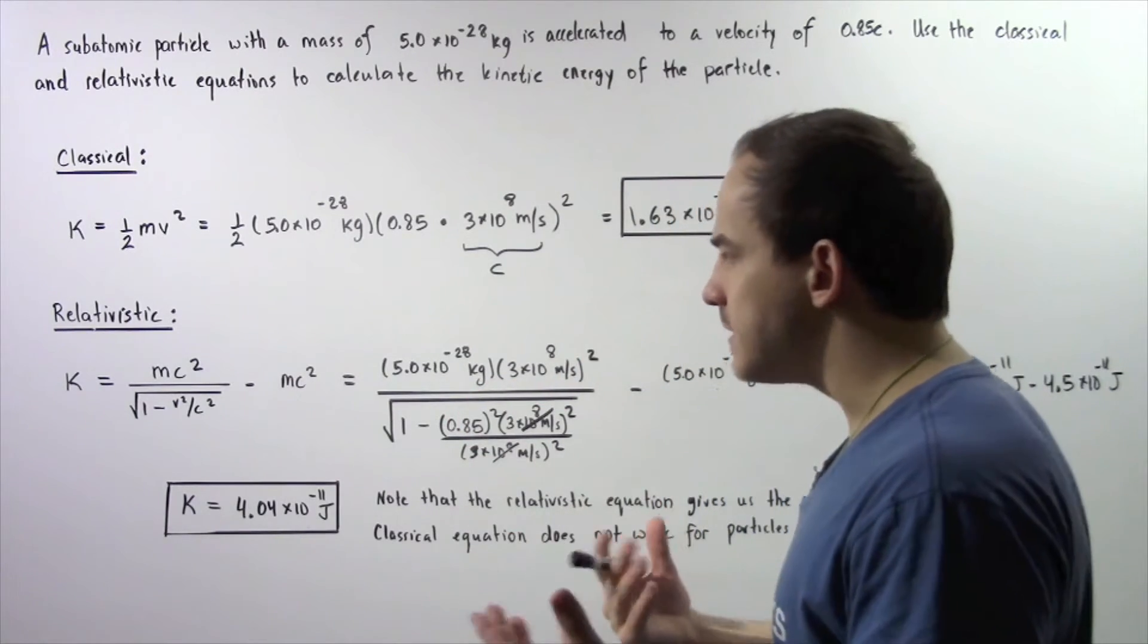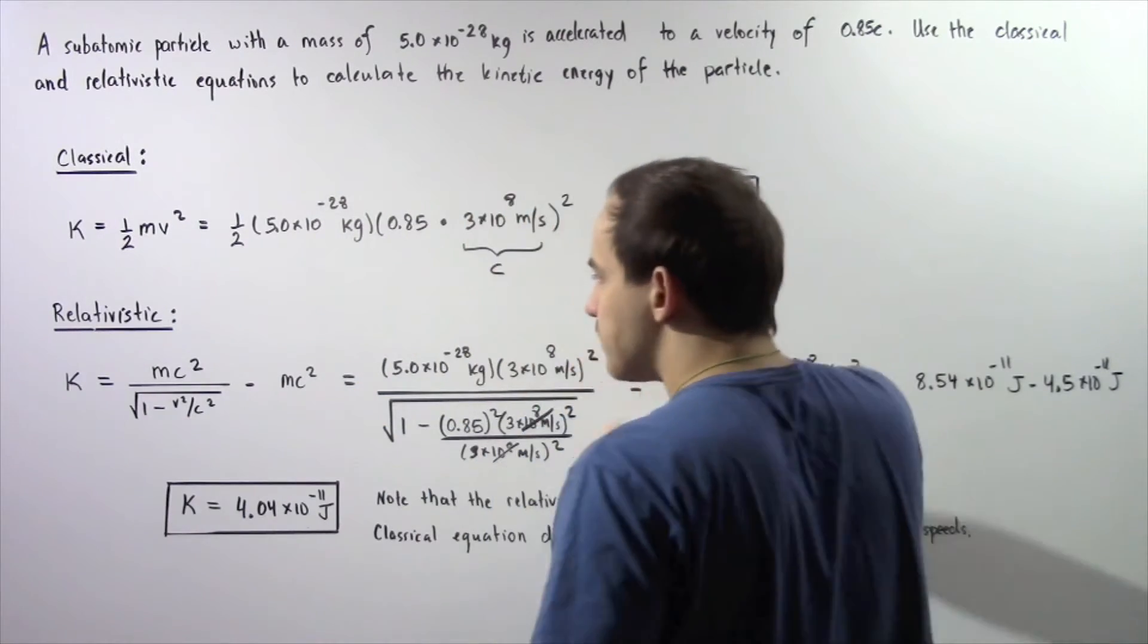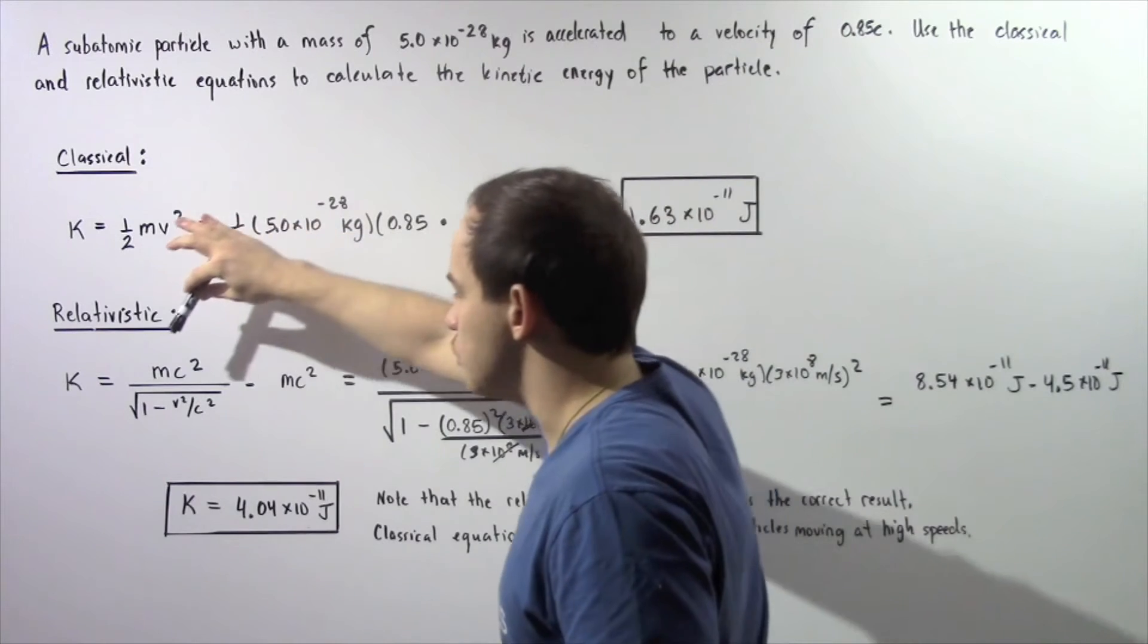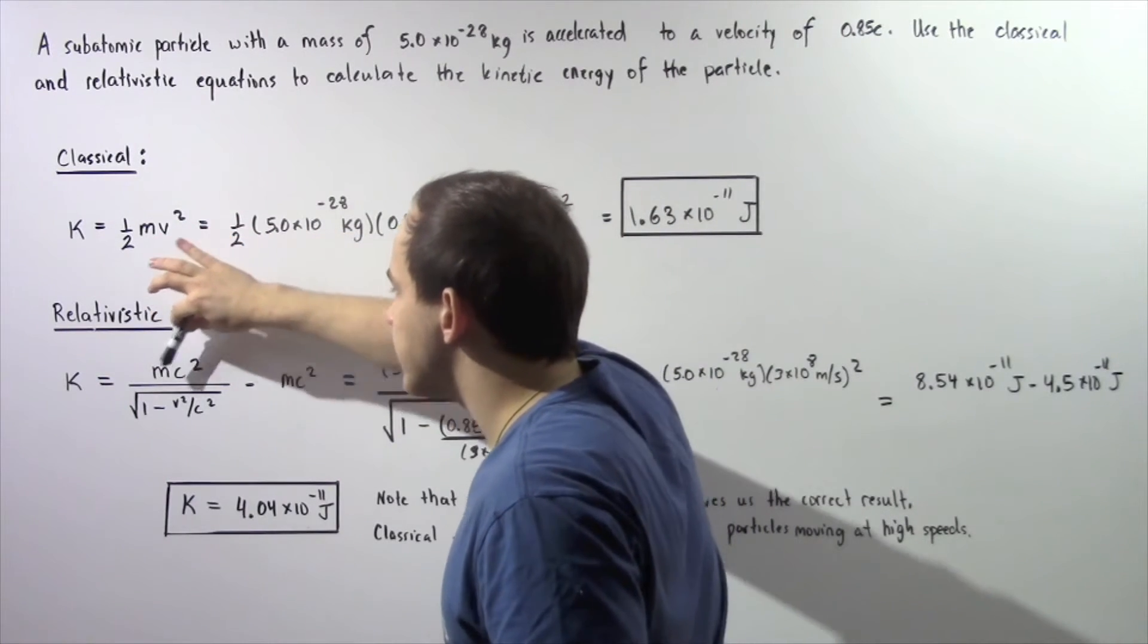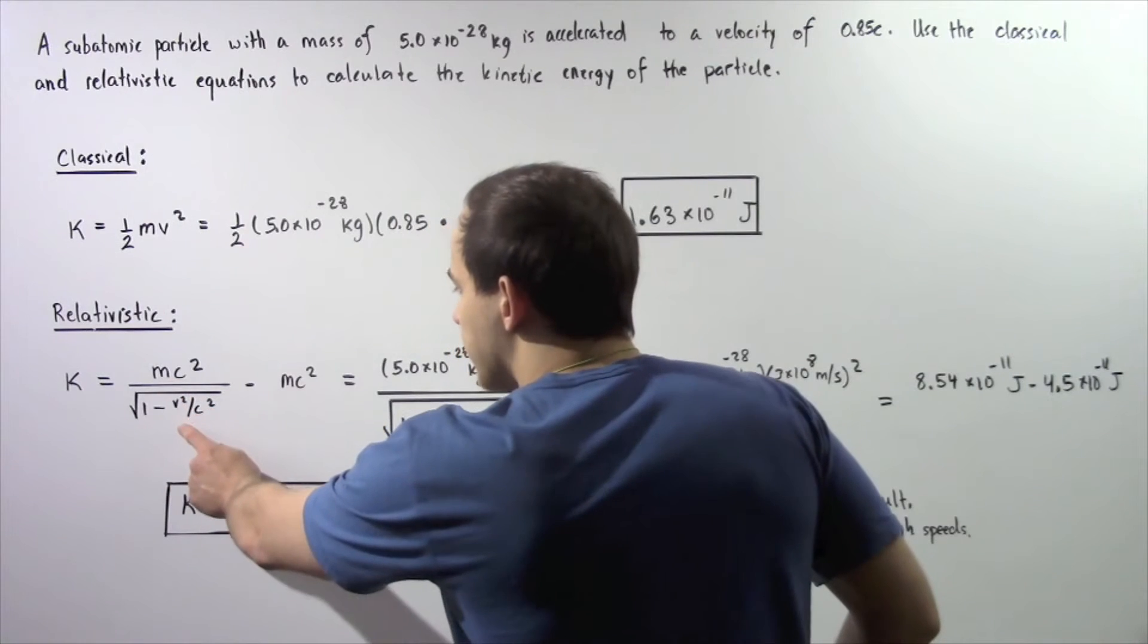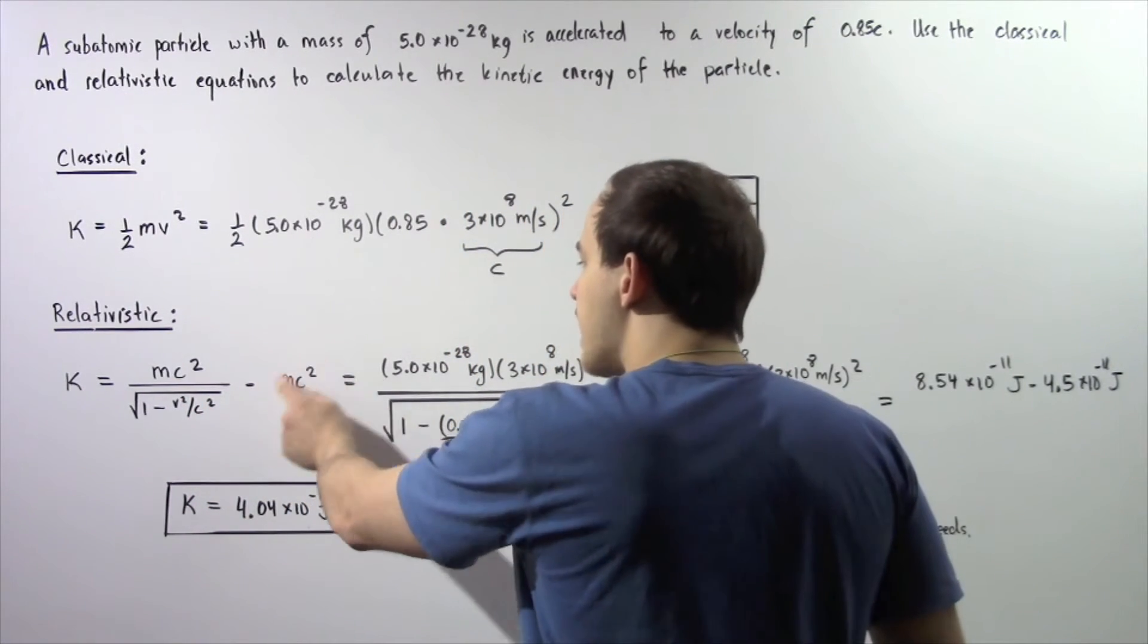Let's move on to the relativistic equation, which is given by this formula. The kinetic energy of the particle is equal to mc squared divided by the square root of 1 minus v squared divided by c squared, minus mc squared, where this is the rest mass energy of our particle.